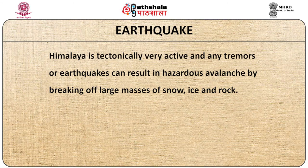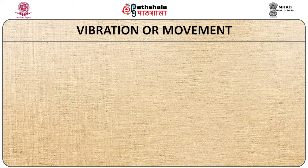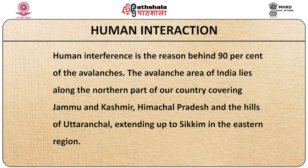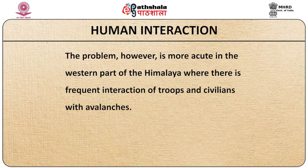Earthquakes: The Himalayas are tectonically very active and any tremors or earthquakes can result in hazardous avalanches by breaking large masses of snow, ice and rocks. Vibrations produced by vehicles, coupled with gravitational pull, are one of the quickest ways to cause an avalanche. Construction work done with explosives tends to weaken the entire surrounding area. Human interference is the reason behind 90% of avalanches. India's avalanche-prone areas lie along the northern part of the country covering Jammu and Kashmir, Himachal Pradesh and the hills of Uttarakhand, extending up to Sikkim in the eastern region. The problem is more acute in the western Himalayas where there is frequent interaction of troops and civilians with avalanches.